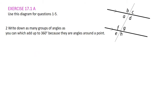Let's go on to question number two: write down as many groups of angles as you can that add up to 360 degrees because they're around a single point. The points we are going to look at are this one here and this one down here. For this first set of points, a plus b plus c plus d all add up to 360 degrees.